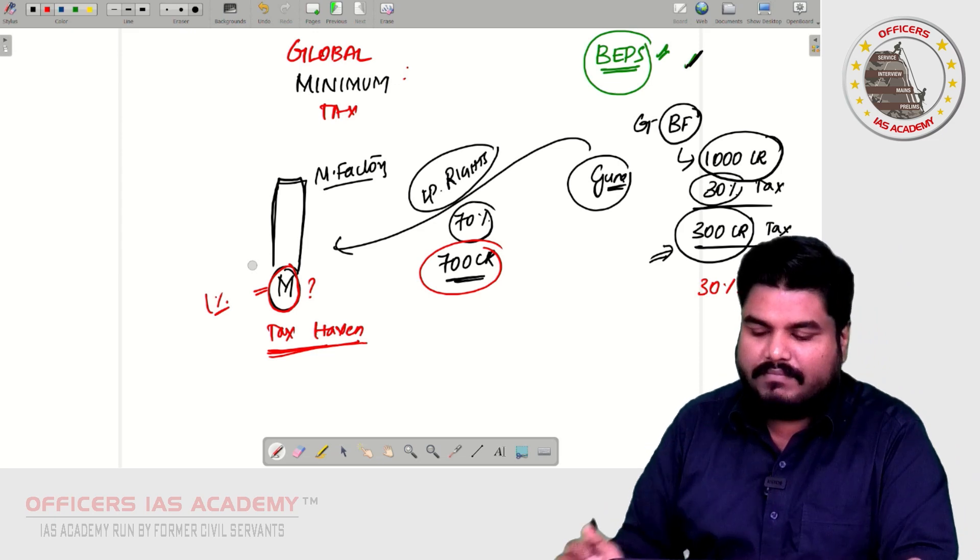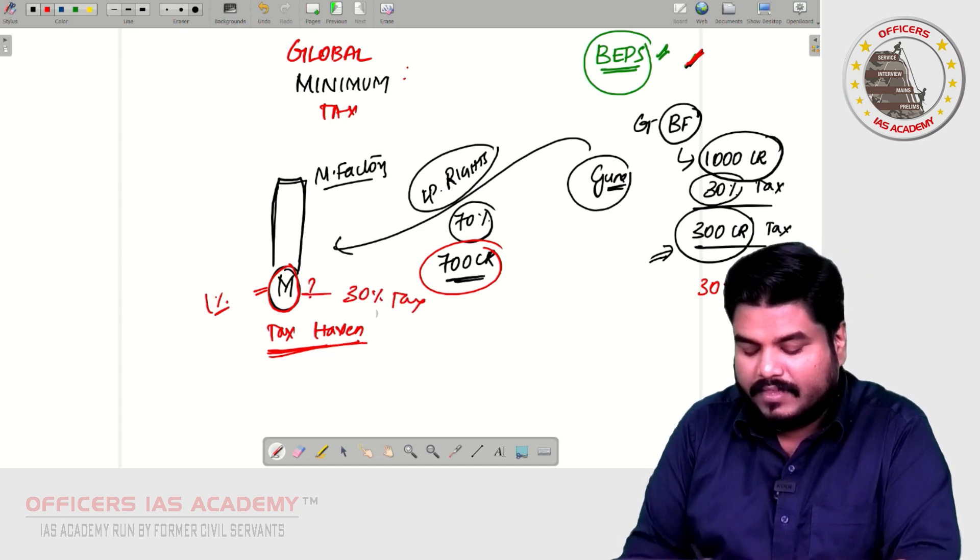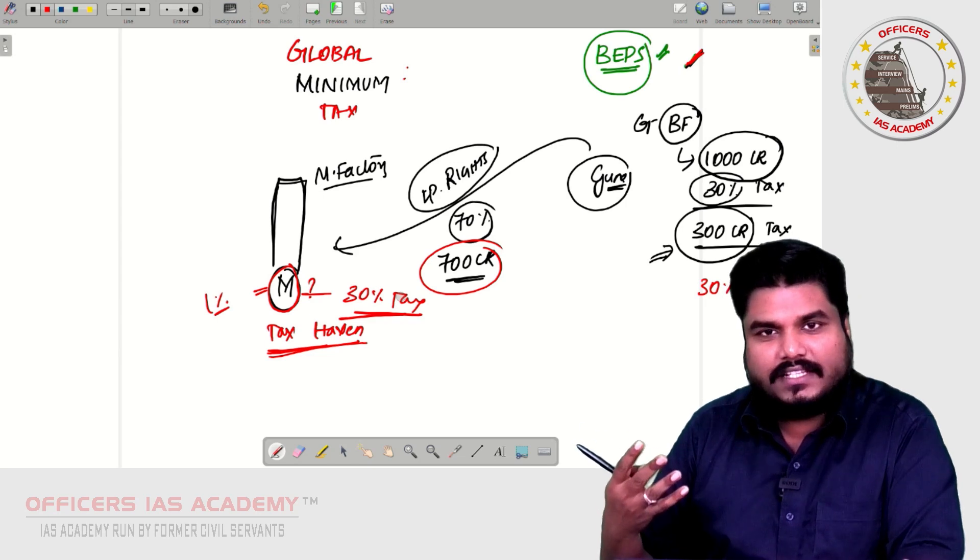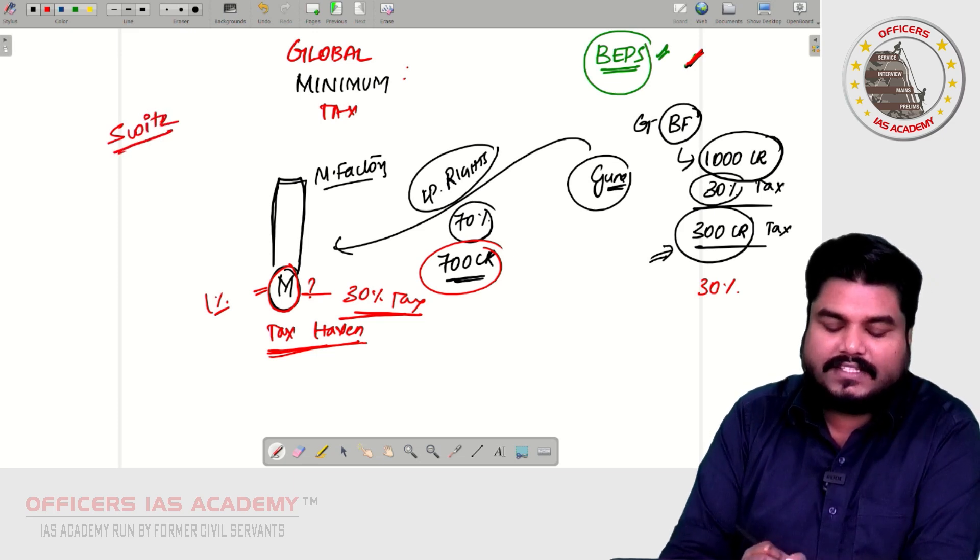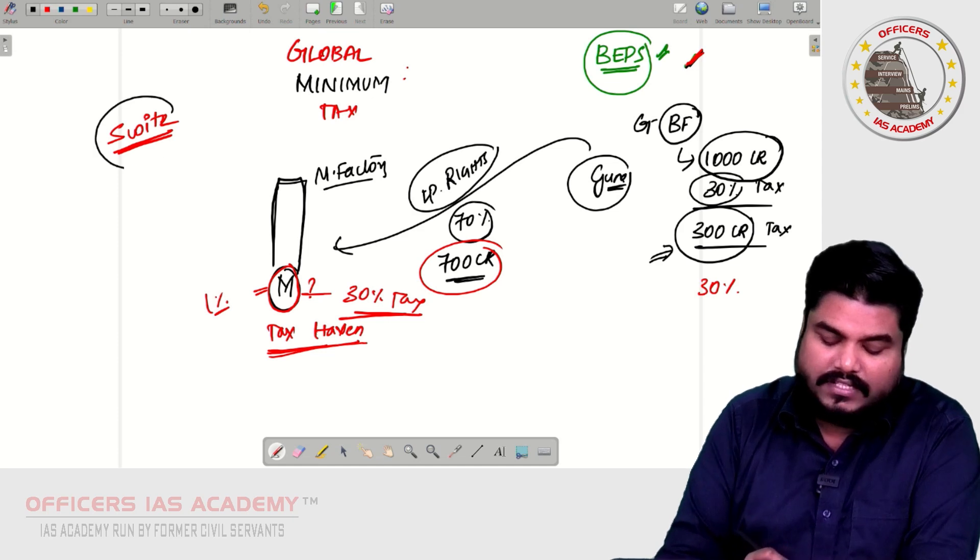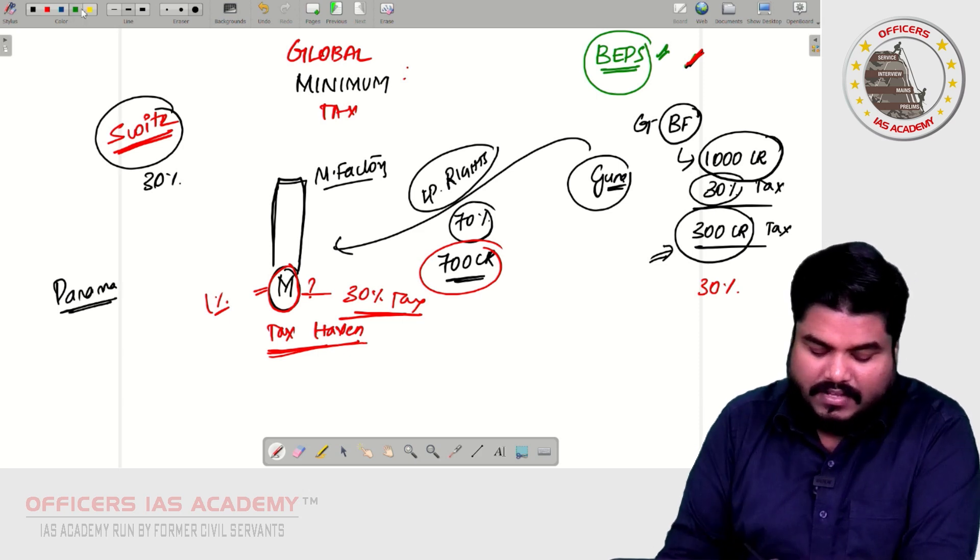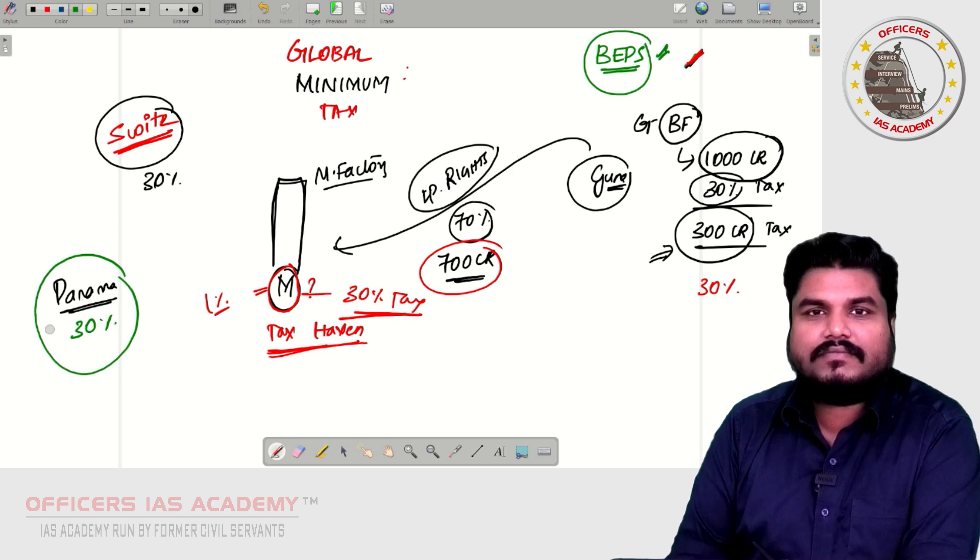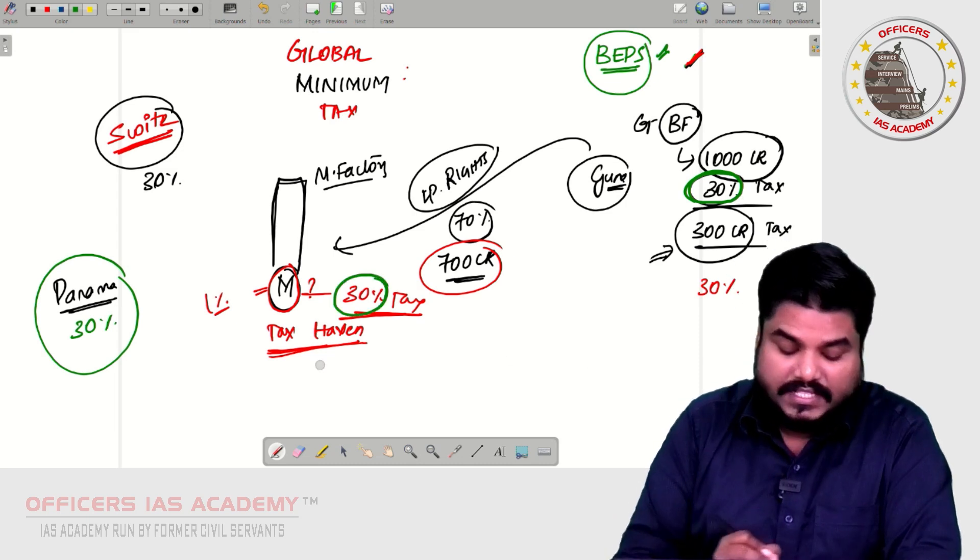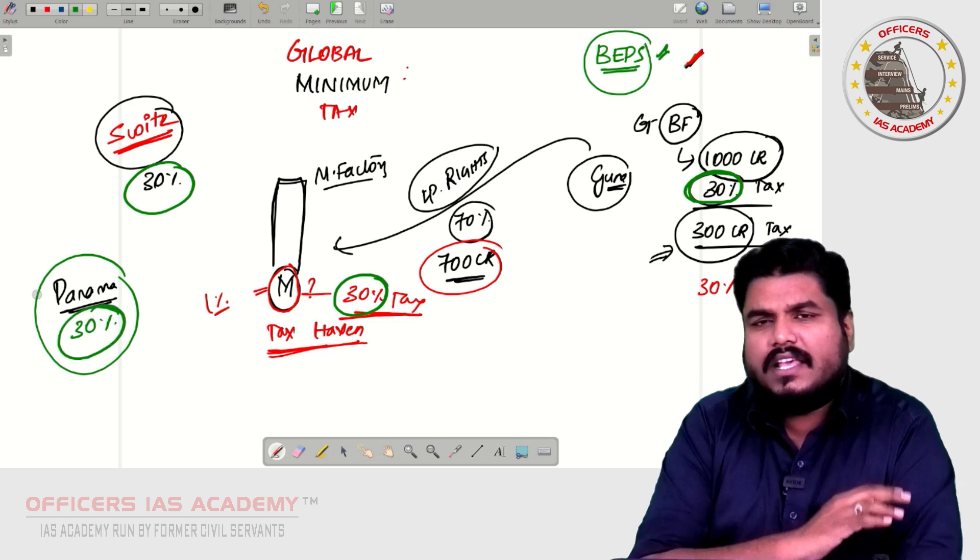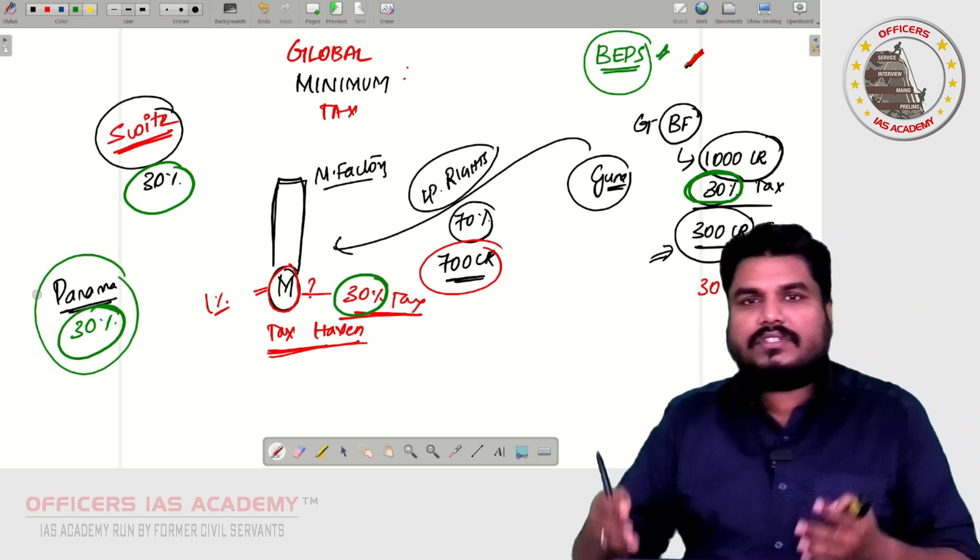But imagine if Mauritius is also imposing 30 percent tax, what will happen? Guna will not go to Mauritius. Maybe Guna might go to Switzerland because Switzerland is also a tax haven. But imagine if Switzerland is also imposing a tax of 30 percent, what will happen? India is imposing a tax of 30 percent, Mauritius is also imposing a tax of 30 percent, Switzerland 30 percent, Panama 30 percent. Imagine if all the countries in the world, they impose a tax of 30 percent, what will happen?